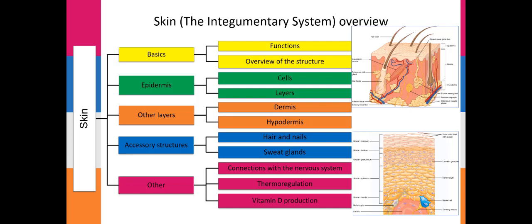The second slide has the overview of this lecture. We're going to start off with the basics of the skin, including its function and its structural overview, followed by the topmost superficial layer of the skin — that's the epidermis — followed by a short discussion on the other two layers of the skin, the dermis and the hypodermis. Next we'll talk about the accessory structures associated with the skin: hair, nails, and sweat glands, and then several other topics connected to the skin.